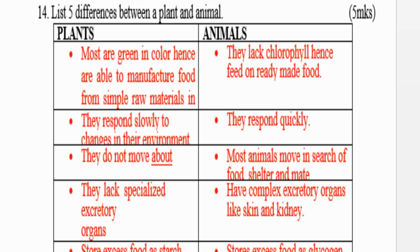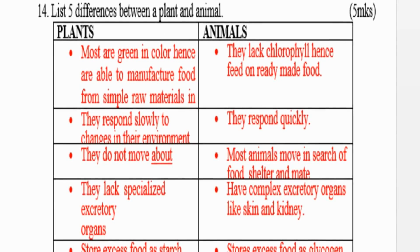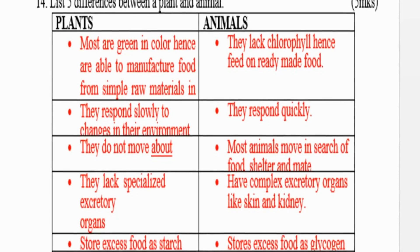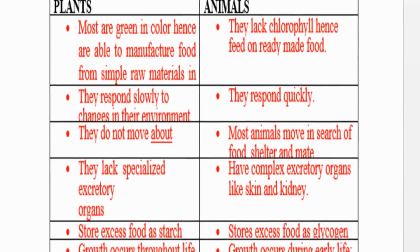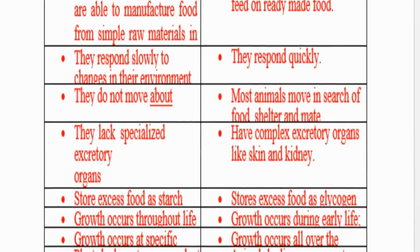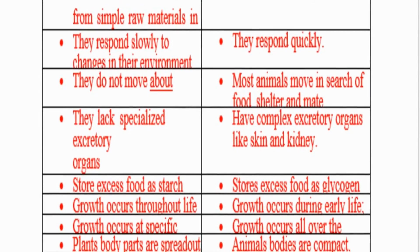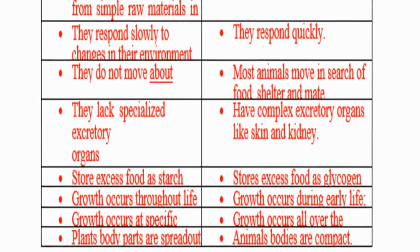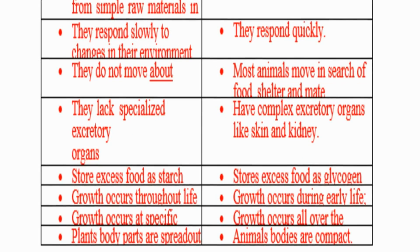Difference number two: plants respond slowly to changes in the environment, while animals respond quickly. Difference number three: plants do not move about, but most animals move in search of food, shelter, and mates. Difference number four: plants lack specialized excretory organs, but animals have complex excretory organs like the skin and kidneys.